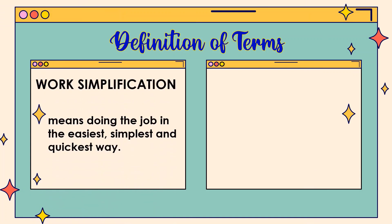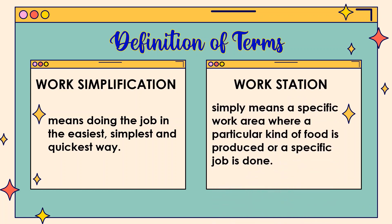Work simplification means doing the job in the easiest, simplest, and quickest way. It describes the making of tasks easier in order to reduce strain. Workstation area is dedicated to preparing food in the kitchen. It simply means a specific work area where a particular kind of food is produced or a specific job is done.